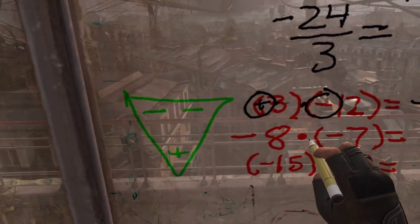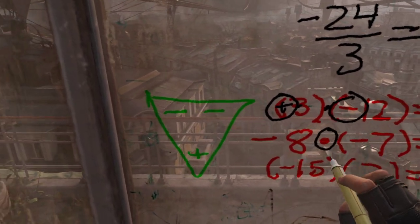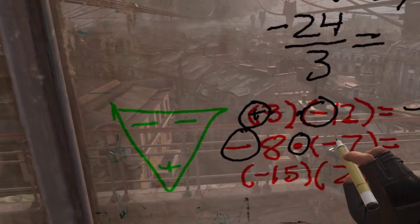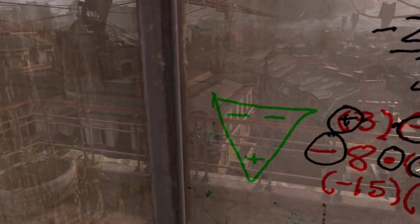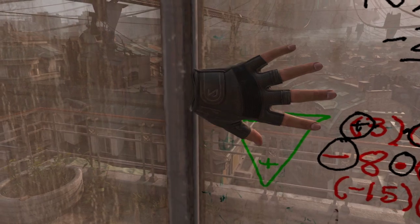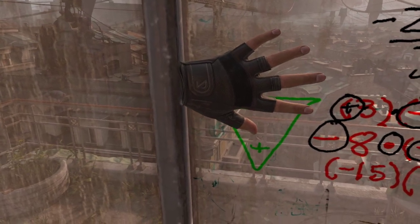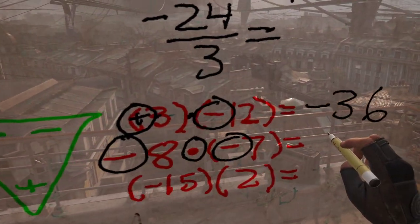Alright, so on the second one here, again we have multiplication and we have a negative times a negative. Let's go back to our triangle. We cover up both negatives, you end up with a positive. The answer is going to be positive.